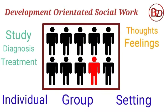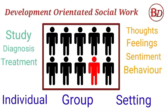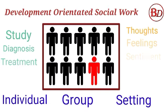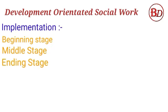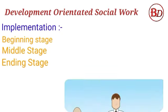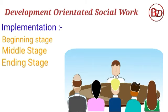Thought, feeling, sentiment, and behaviour of the client are continuously assessed by the group worker. The social worker tries to improve the situation among group members, agency, and social environment. Development-oriented social work is implemented in three stages: beginning stage, middle stage, and ending stage, understood from the perspective of both client and social worker.